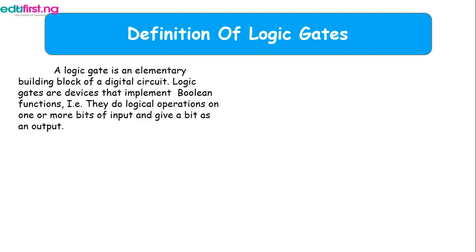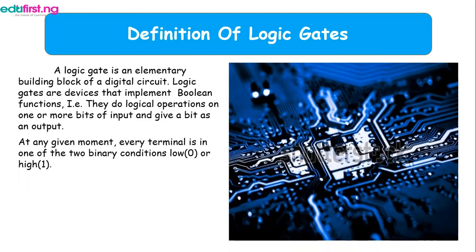Logic gates are devices that implement Boolean functions, that's the set 1 and 0. It does a logic operation on one or more bits of input and gives a bit as an output. At any given moment, every terminal is in one of the two binary conditions, which is low for 0 and high for 1.